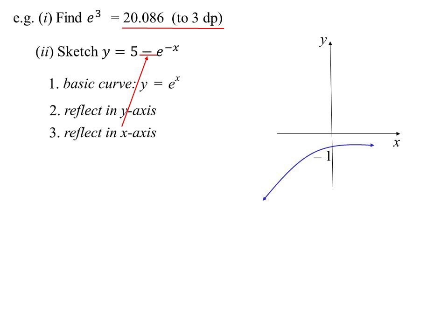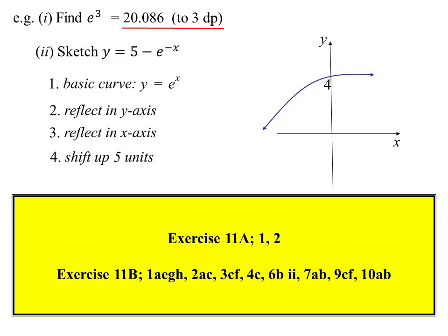And then finally, we shift the whole thing up 5, and there is our final picture. That would be 5 minus e to the minus x. And that will do us for the day.